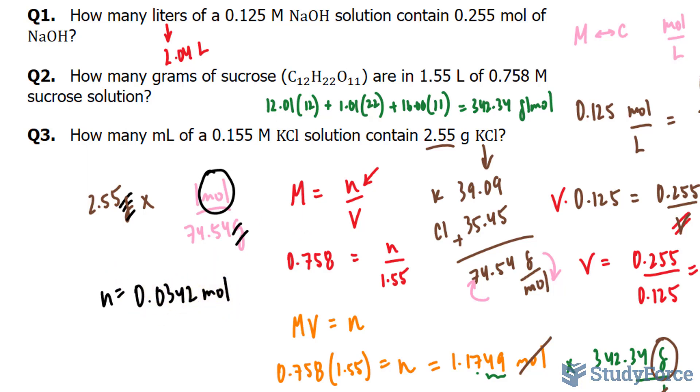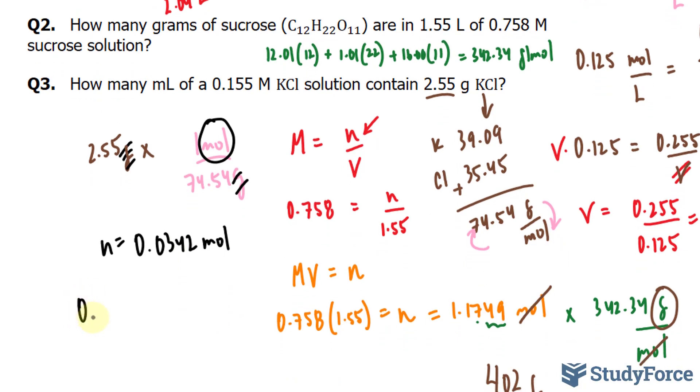Now using this and using the fact that we have 0.155 molar as given in the question, I can now set up a simple equation where I have the number of moles at the top, which is 0.0342 moles, over the volume at the bottom.